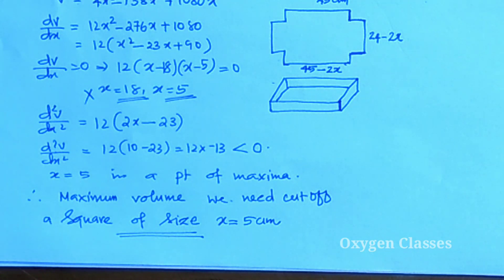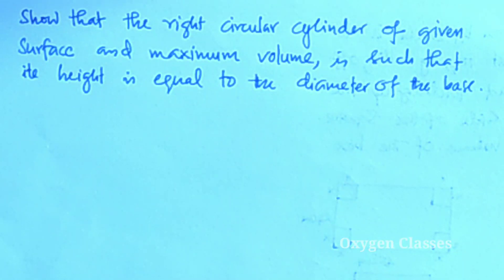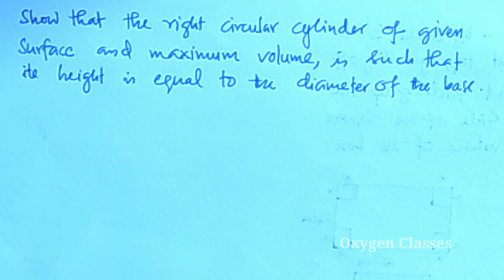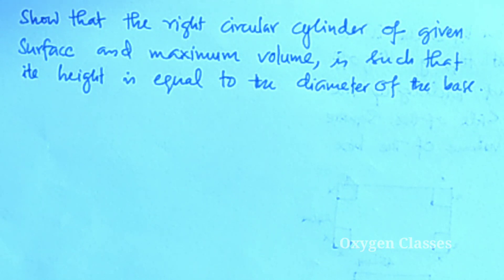Next question: show that the right circular cylinder of given surface area and maximum volume is such that its height is equal to the diameter of the base. This is a lengthy problem from the state syllabus.